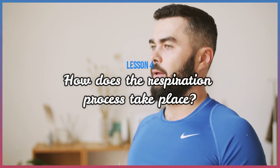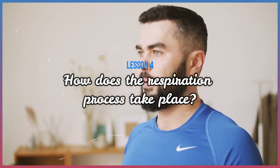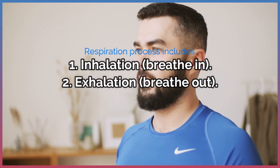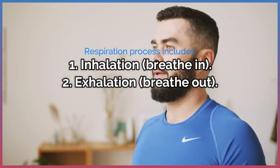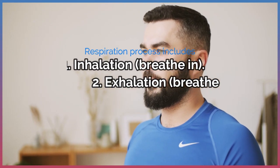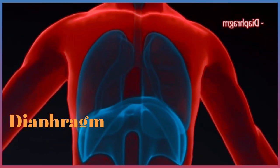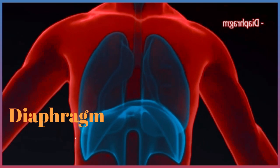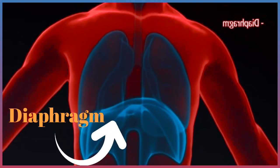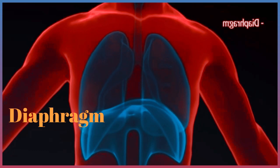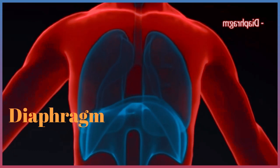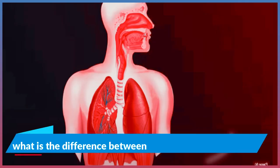How does the respiration process take place? The respiration process includes two steps: one, inhalation — breathe in; two, exhalation — breathe out. Inhalation and exhalation are directed by a large muscle at the base of the ribs called the diaphragm.